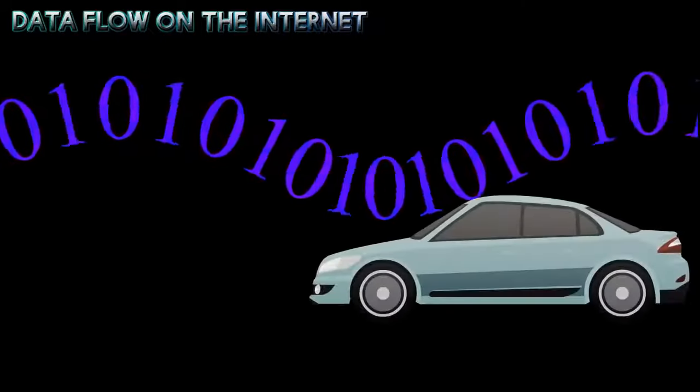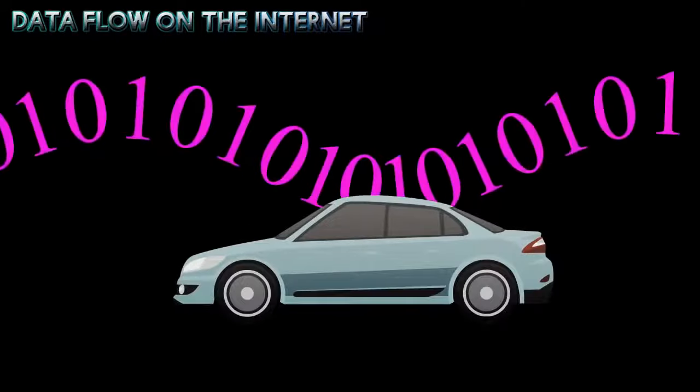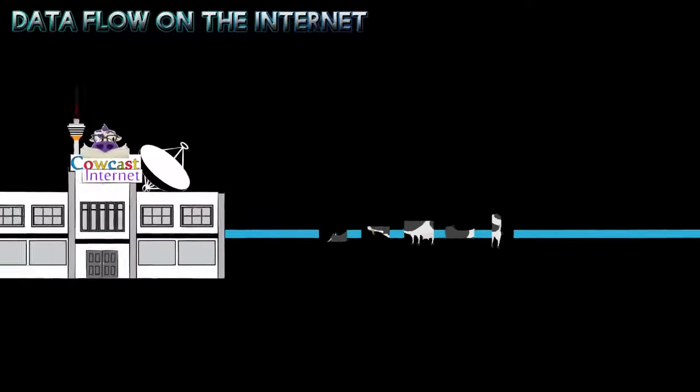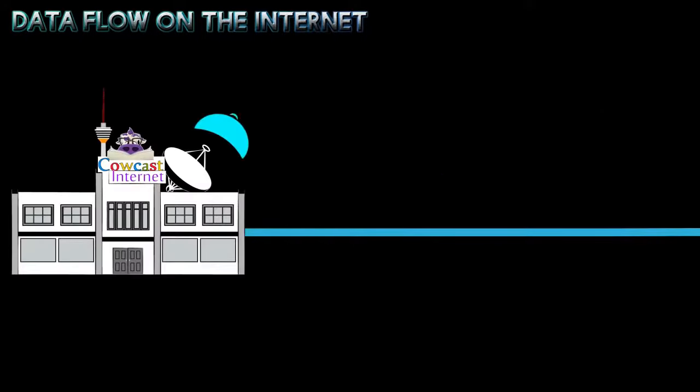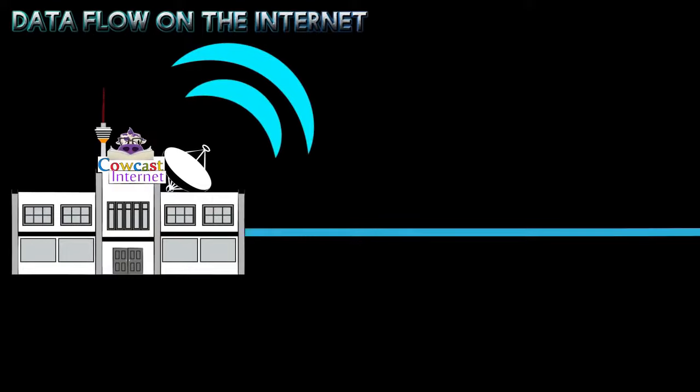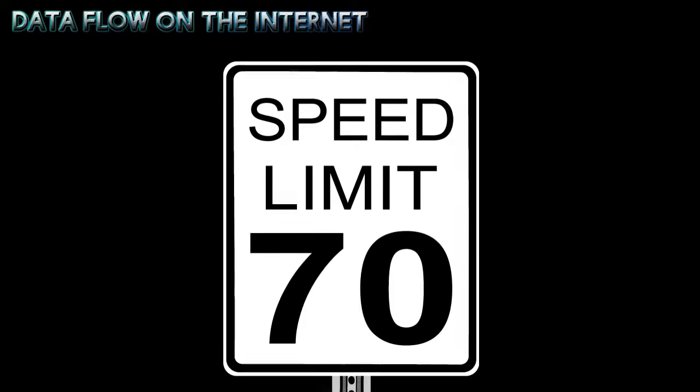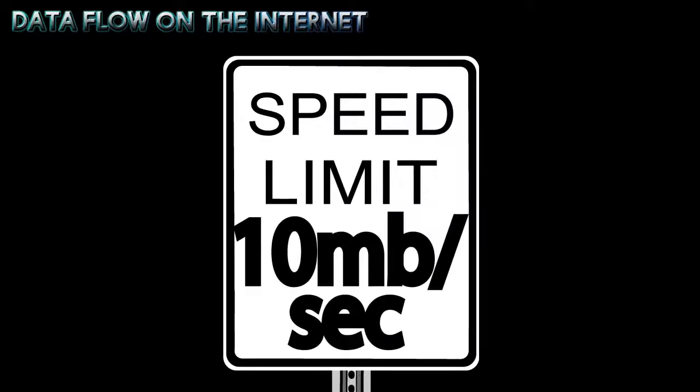Let's compare how data flows on the Internet to how cars travel on streets. The data packets from your computer are sent to your Internet Service Provider, or ISP, which sends them out to the Internet. Just as streets have speed limits for cars, the speed at which your data packets travel is dependent on your Internet connection.